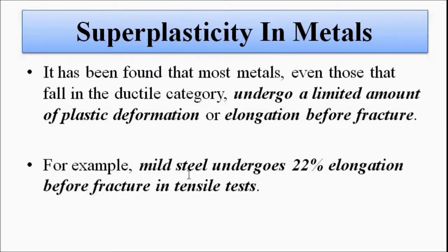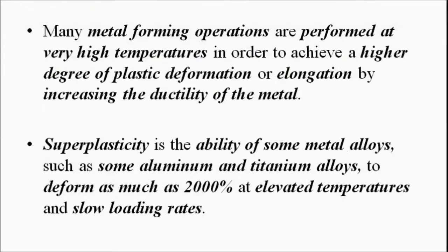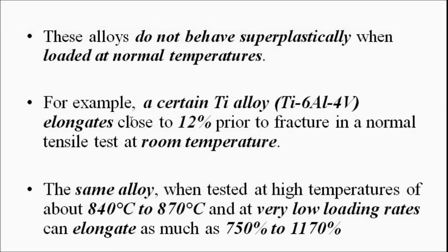The ability to elongate more or undergo more plastic deformation at higher temperature values is called super plasticity. For example, normal steel undergoes 22 percent elongation before fracture in a tensile test. When temperature is increased, the ability to elongate also increases by several factors — up to almost 200 percent. A certain titanium alloy elongates about 12 percent when subjected to tensile test at normal room temperature, but when the same alloy is tested at 840 to 870 degrees Celsius, it elongates as much as 750 to 1170 percent.